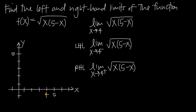Let's graph f(x) = √x · (5 − x) by plugging in a few points. At x = 0: √(0 · 5) = 0, giving point (0, 0). At x = 1: √(1 · 4) = √4 = 2, giving (1, 2). At x = 4: √(4 · 1) = √4 = 2, giving (4, 2). At x = 5: √(5 · 0) = 0, giving (5, 0). The graph forms a curve — roughly a half circle — connecting all these points.